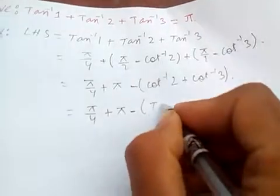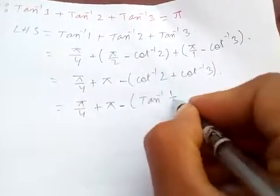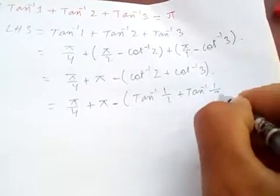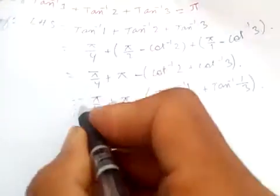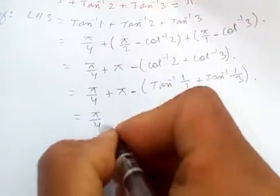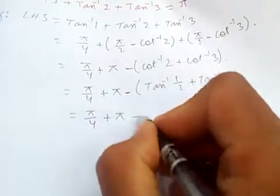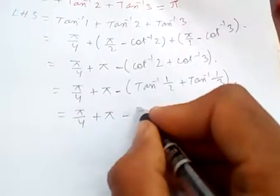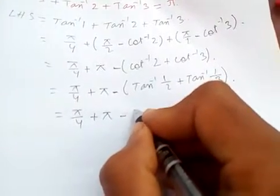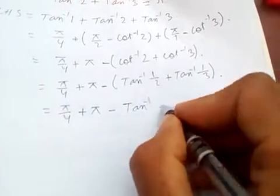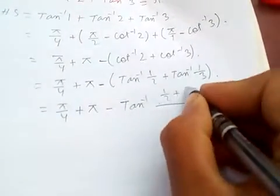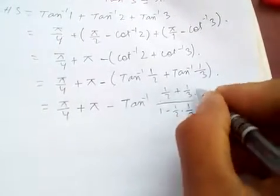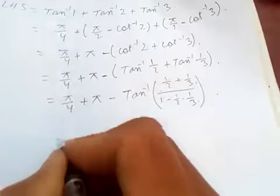Now arccot(2) + arccot(3) becomes arctan(1/2) + arctan(1/3). We apply the addition formula: arctan(a) + arctan(b) = arctan((a + b) / (1 − ab)).